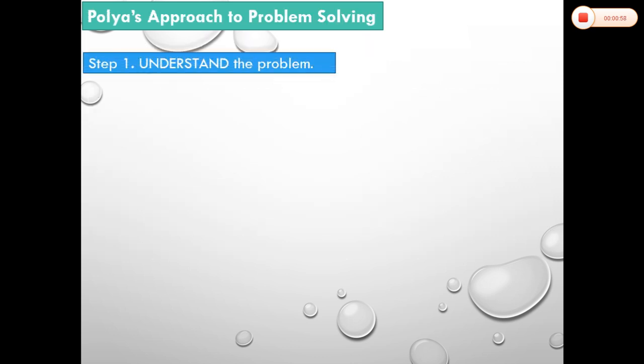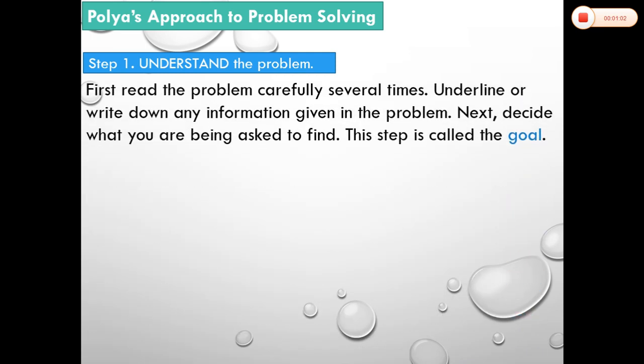According to Polya, step number one is understand the problem. First, read the problem carefully several times. Underline or write down any information given in the problem. Next, decide what you are being asked to find. This step is called the goal.